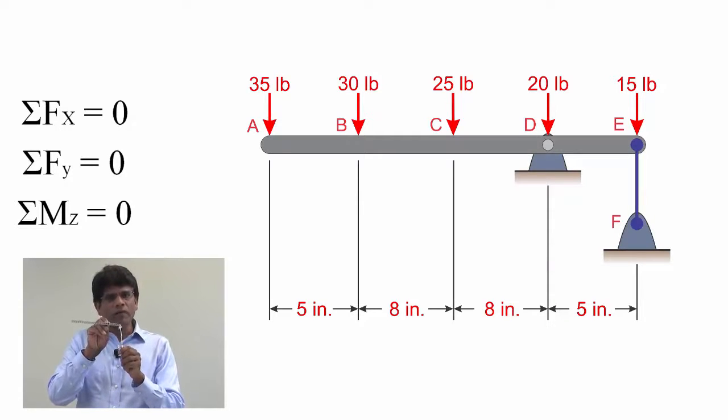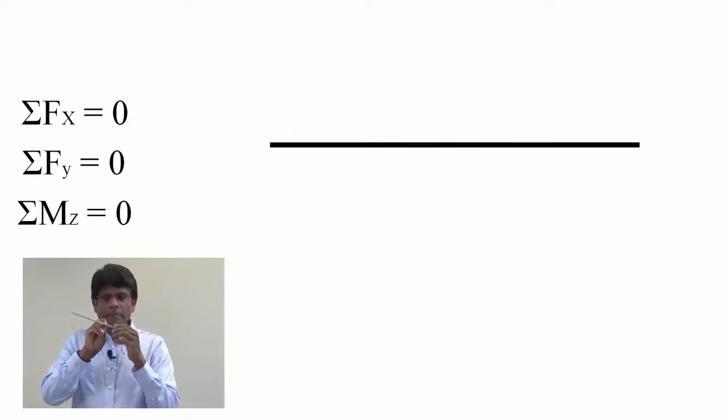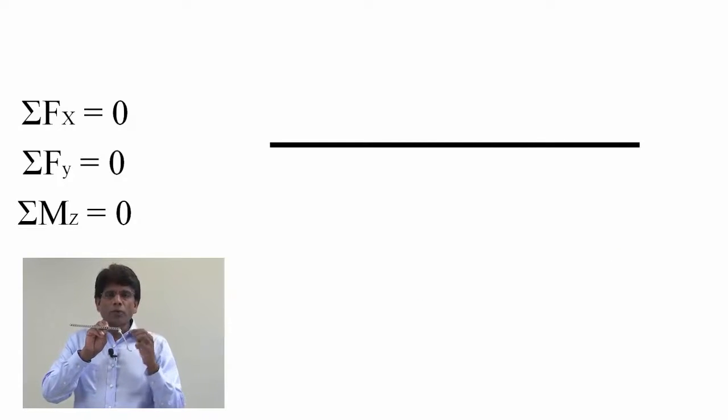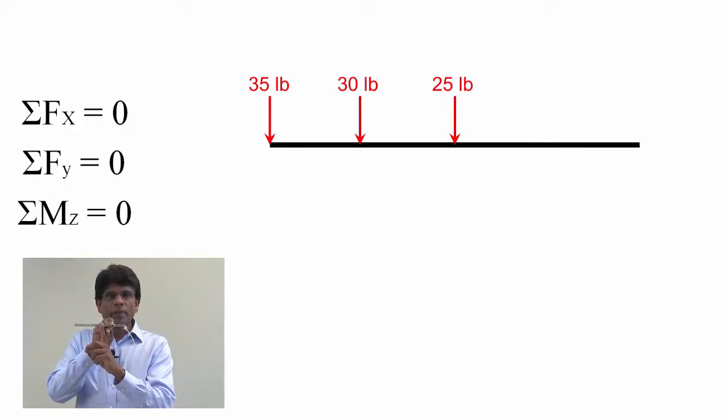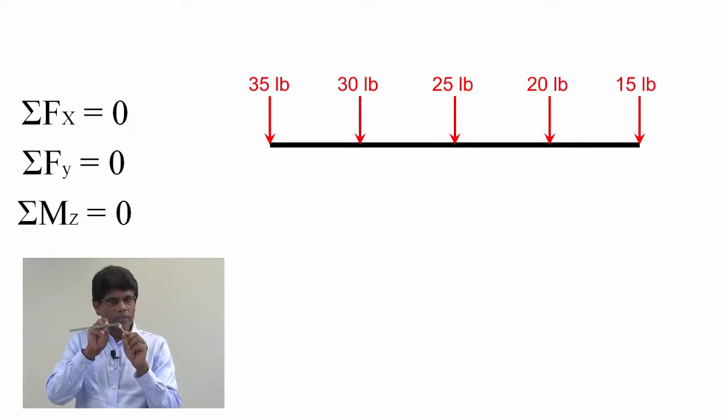we can now draw the free body diagram of this system. In this case, we will have to draw the entire beam for the free body diagram. I have to show all the applied forces: 35 pounds, 30 pounds, 25 pounds, 20 pounds, and 15 pounds at the appropriate locations.